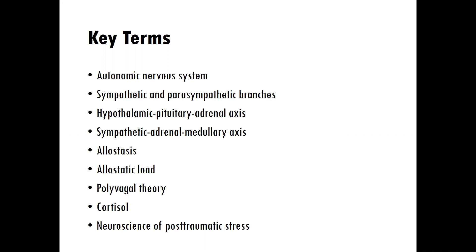Then we'll learn about polyvagal theory — we'll spend a little bit more time on that this week — as well as cortisol and the typical trajectories of cortisol production and what happens in trauma. And then we'll turn our attention to the neuroscience of post-traumatic stress: what happens in the brain when a person experiences post-traumatic stress.